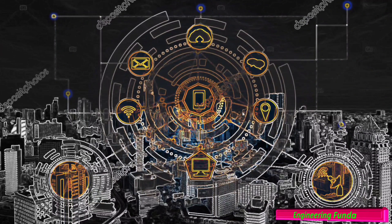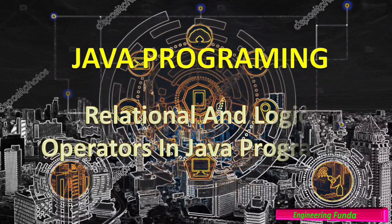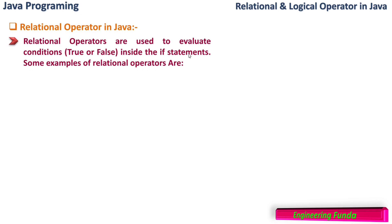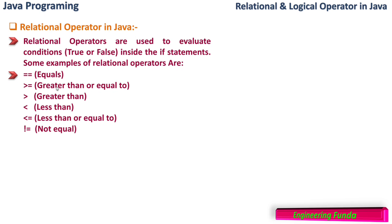Welcome to the Java programming playlist. In this video we are going to see the relational and logical operators in Java programming. The relational operators are used to evaluate conditions that are true or false inside if statements. Some examples of relational operators are: equals, greater than or equal to, strictly greater than, strictly less than, less than or equal to, and not equal to. There are six relational operators available in Java programming.